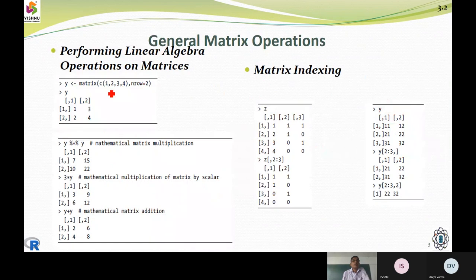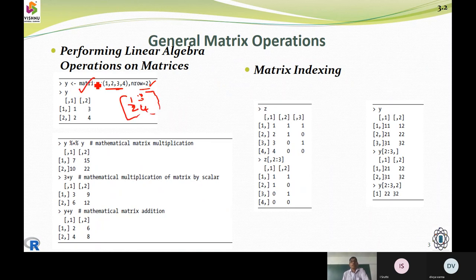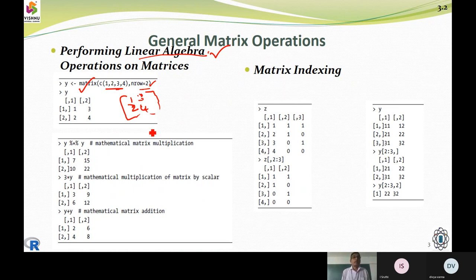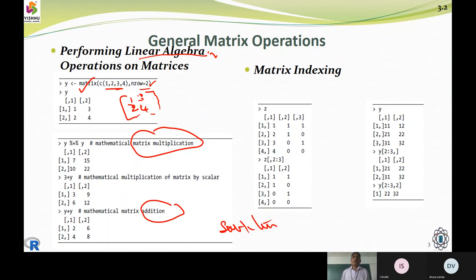With four elements one two three four printed in two rows, the first row takes the first element, then the second row takes its first element, then the second element of row one, then the second element of row two. Now, the linear algebraic operations that can be performed on a matrix include matrix multiplication, matrix addition, and matrix subtraction.